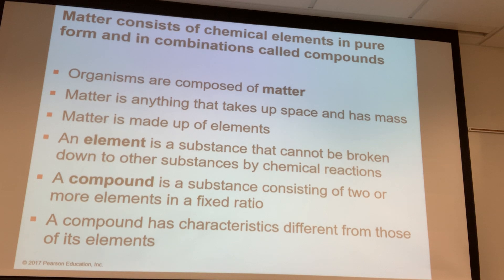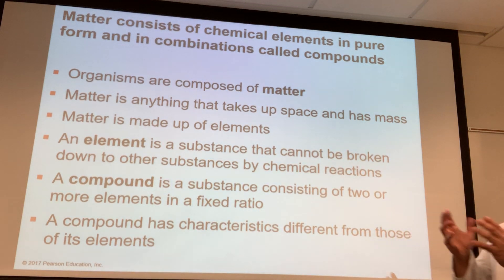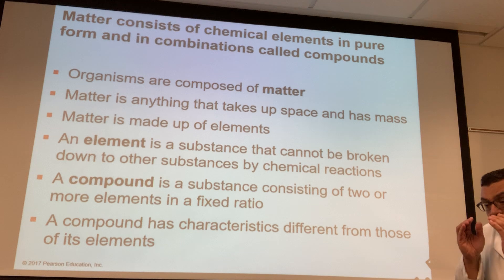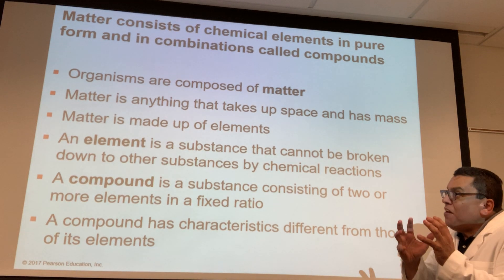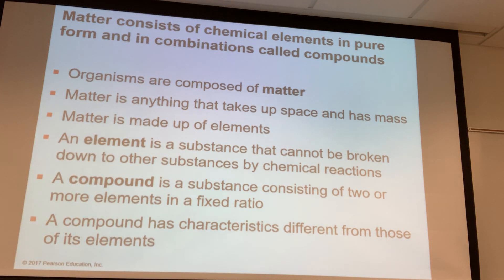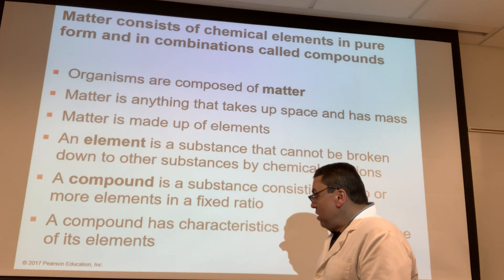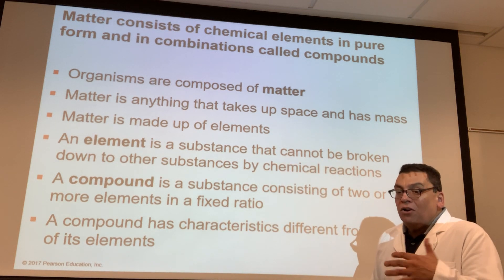The simplest part of matter is the atom. Elements are made up of the same atoms. An element, for example carbon, is made up of carbon atoms. When we look at the periodic table, we realize that each of these elements is made up of the same type of atom. Carbon element is made up of carbon atoms, nitrogen is made up of nitrogen atoms, and so forth. So, an element is a collection of similar atoms.